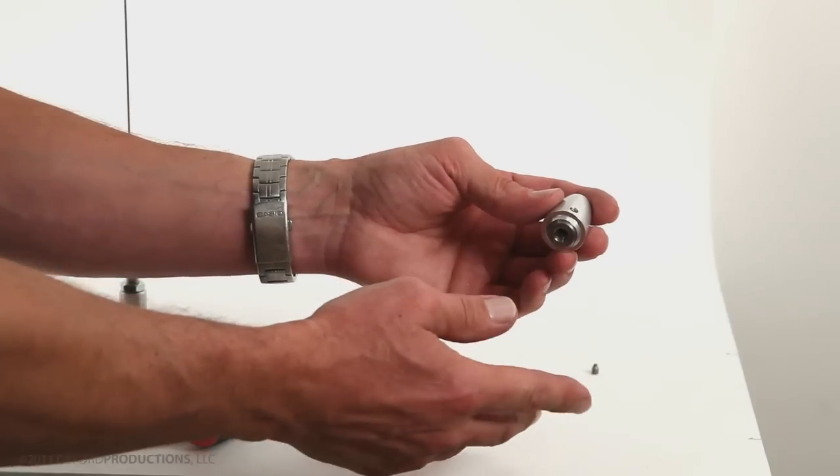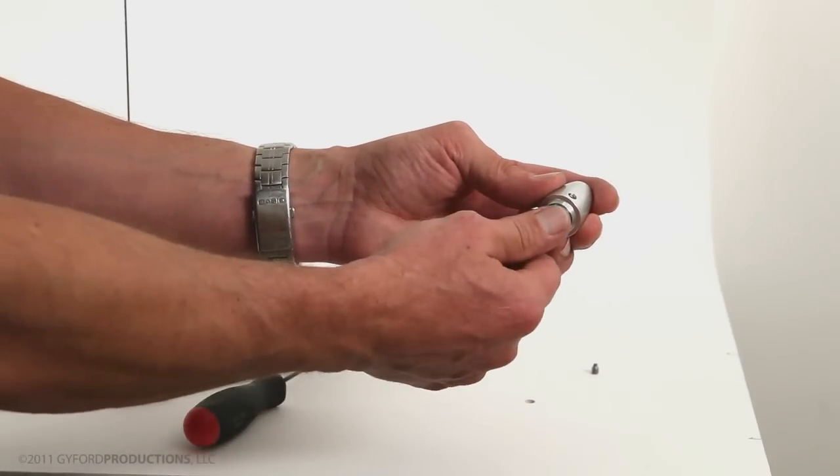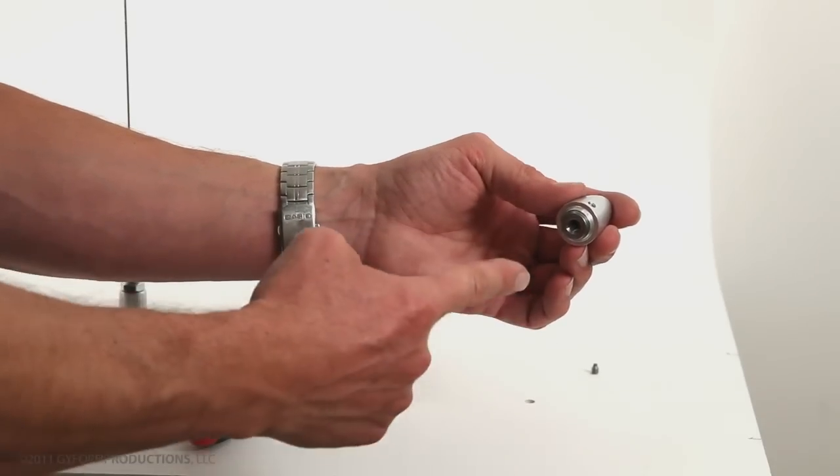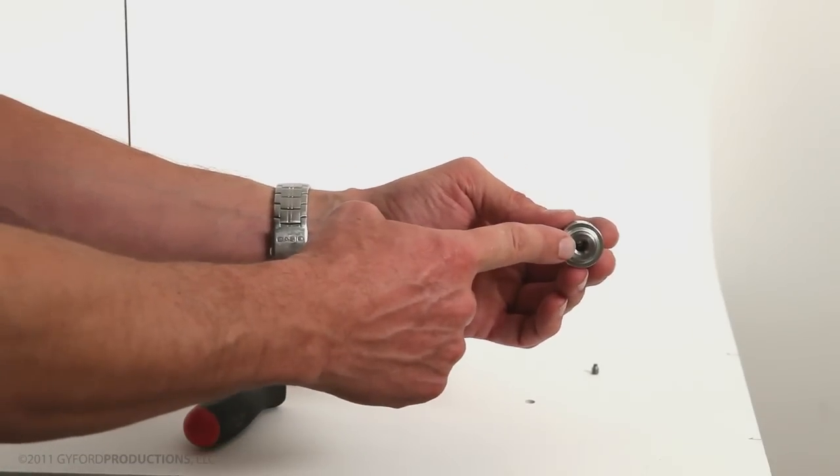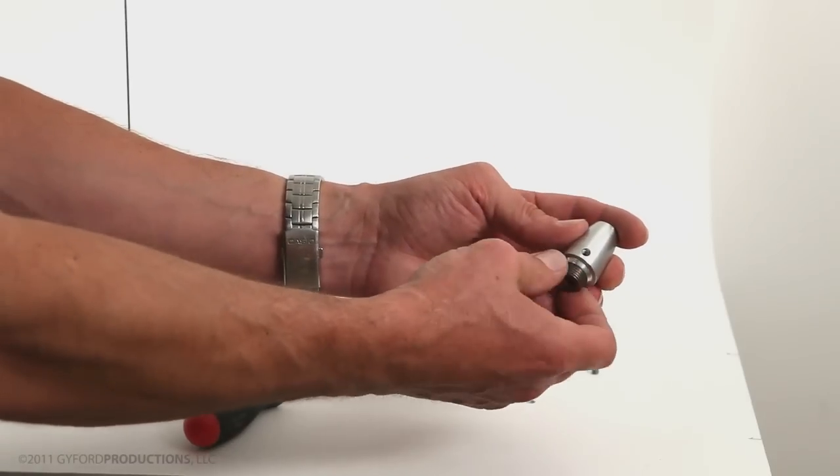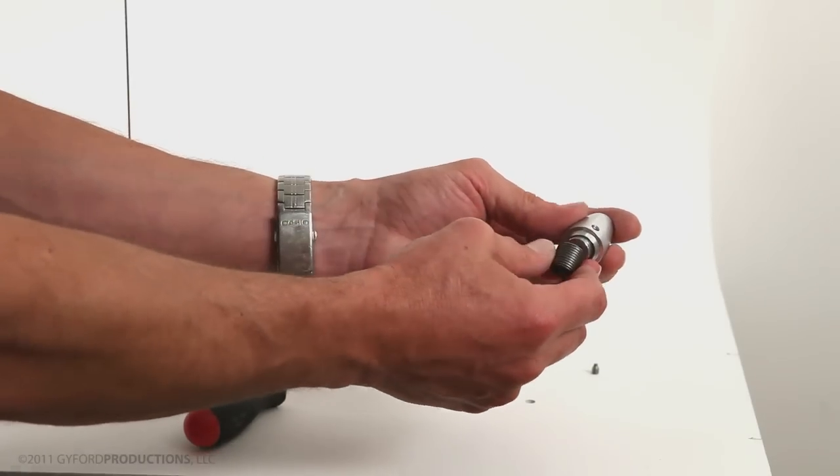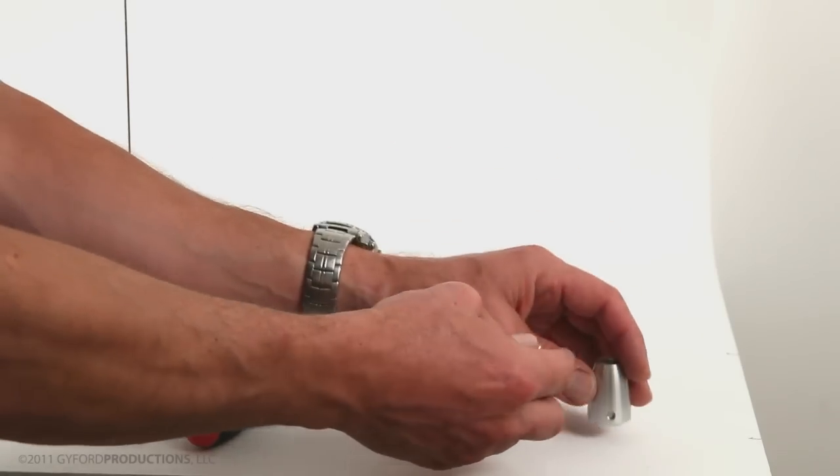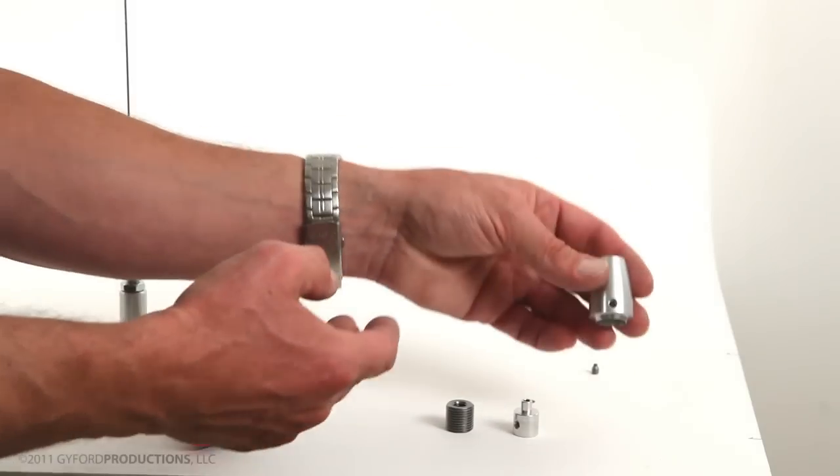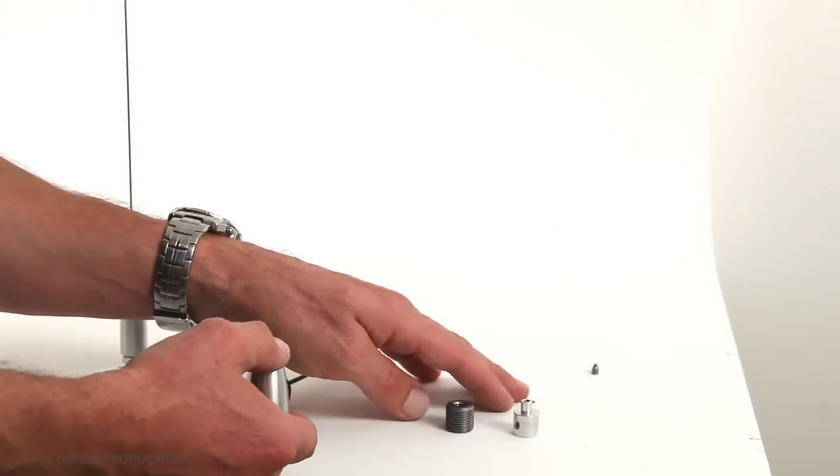The next step is to remove the turnbuckle base from the hood. This can be a little tricky sometimes, but you can usually get a hold of it with your fingers, use your thumb. If you get really stuck, you can run a screw up into the threaded hole, pinch against it, and rotate it out. So once we've got this disassembled, you'll see we've got three pieces and a couple set screws. The first step is to mount the turnbuckle base to the surface that you'll be mounting to.